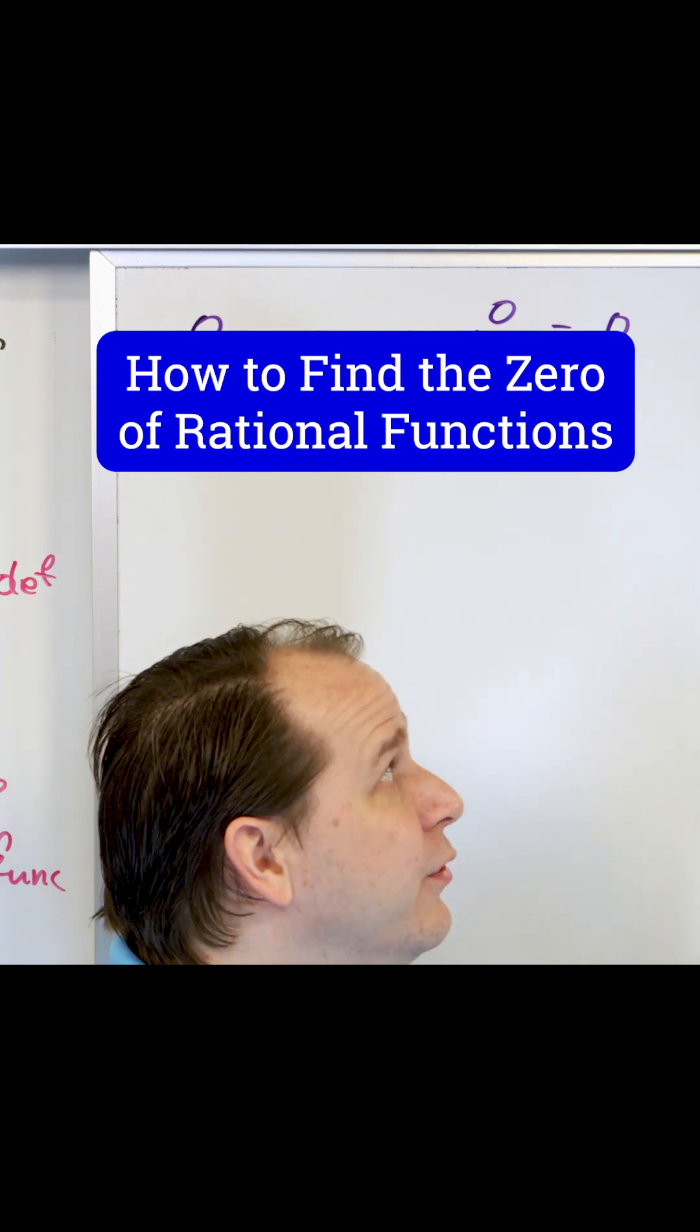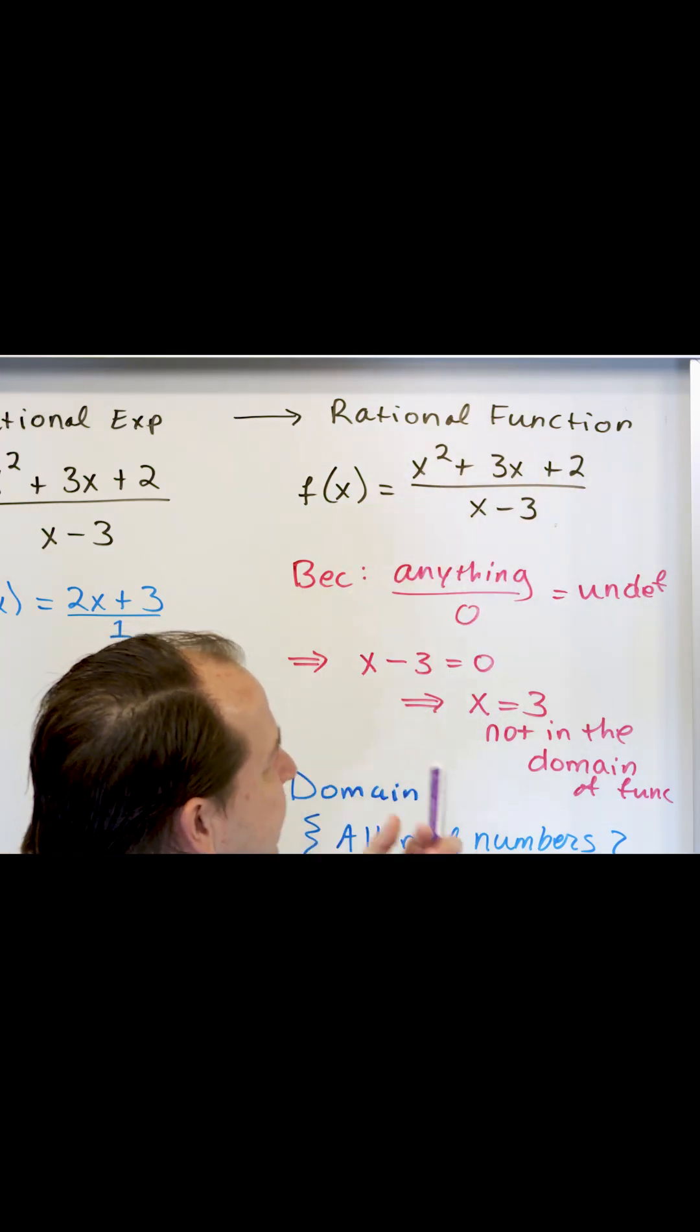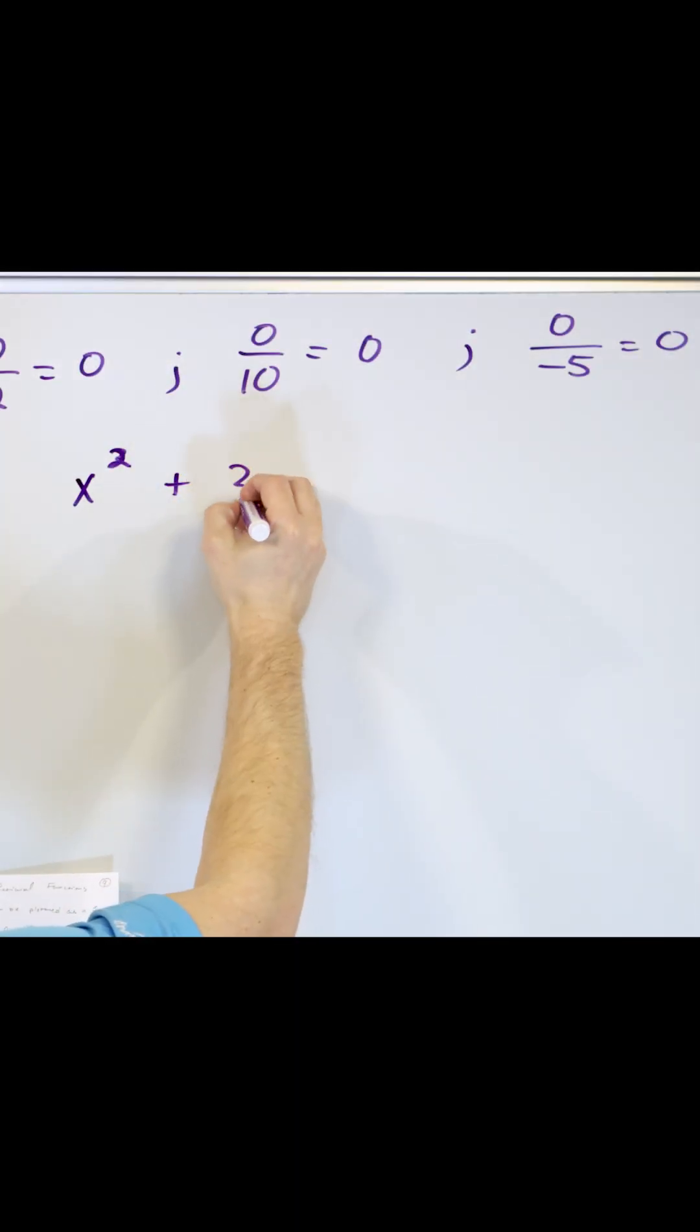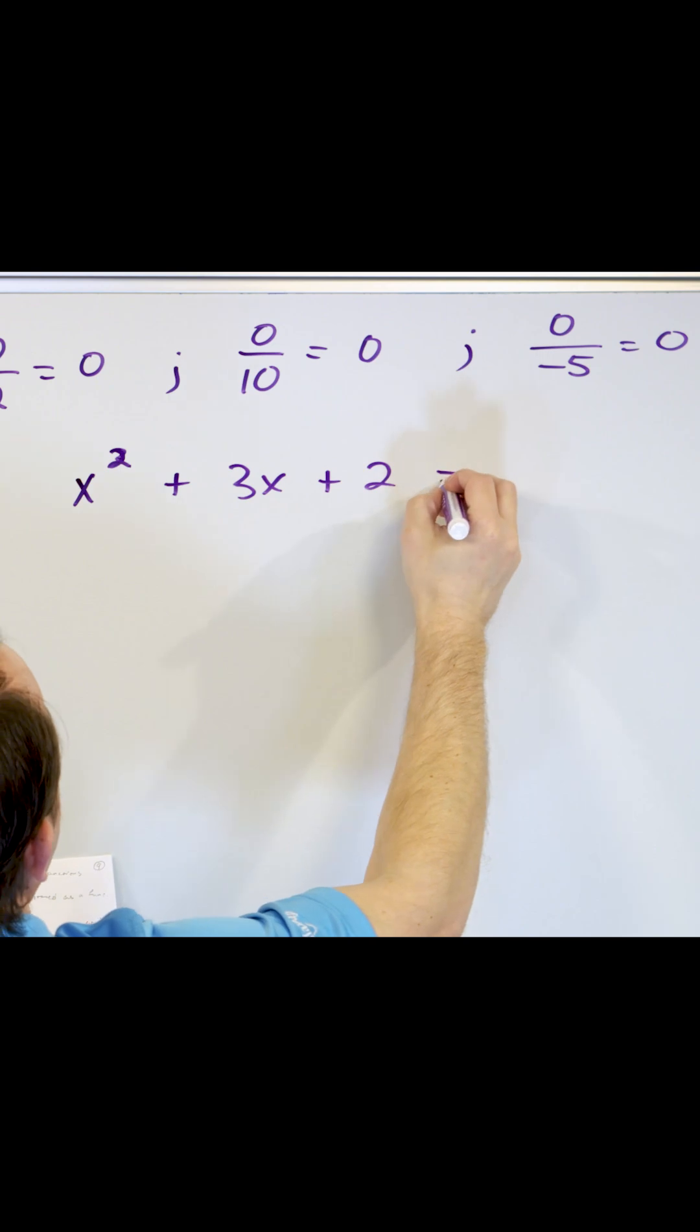And to do that, all you do is you take the numerator of the fraction and set it equal to zero. x² plus 3x plus 2. We set that equal to zero and we say, okay,